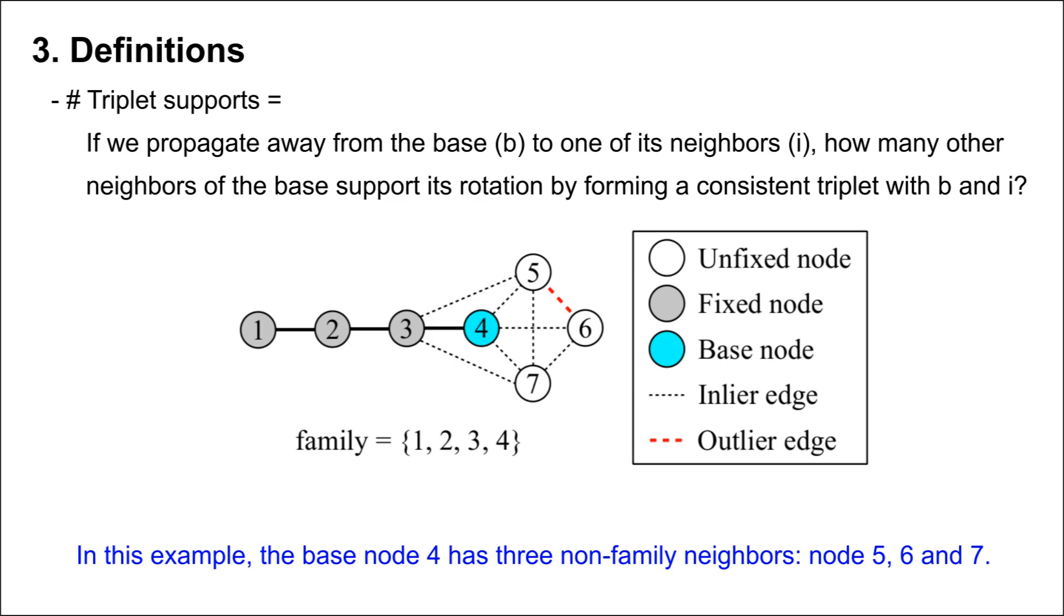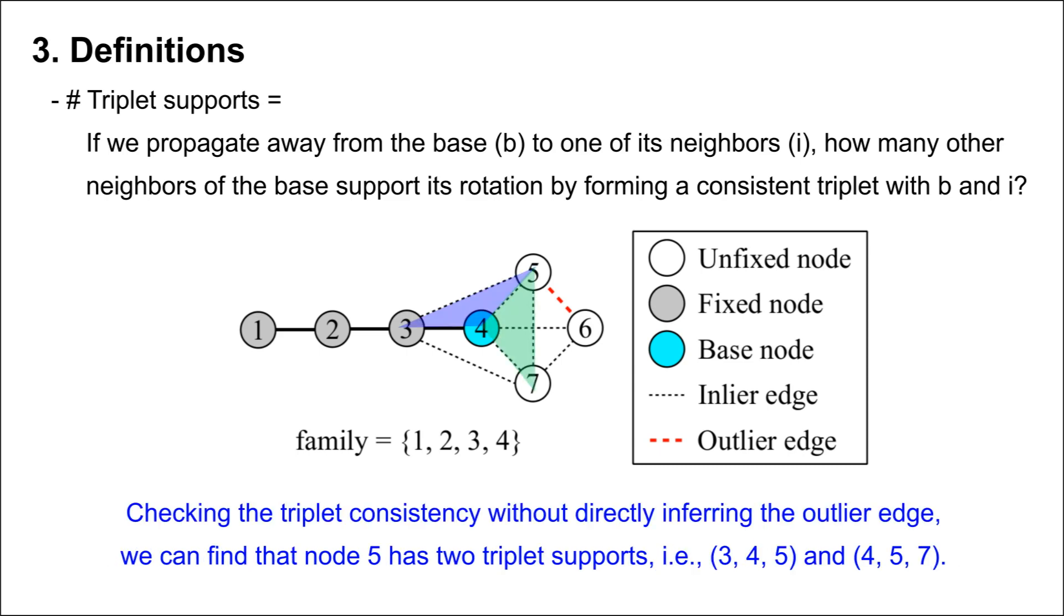In this example, the base node 4 has three non-family neighbors: node 5, 6, and 7. Checking the triplet consistency without directly inferring the outlier edge, we can find that node 5 has two triplet supports: 3, 4, 5 and 4, 5, 7.